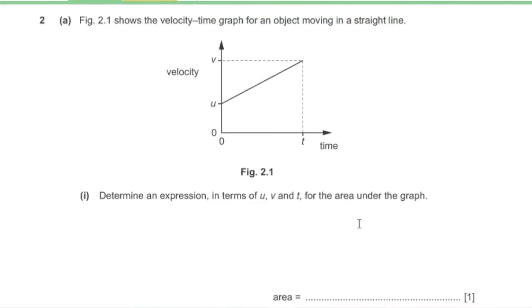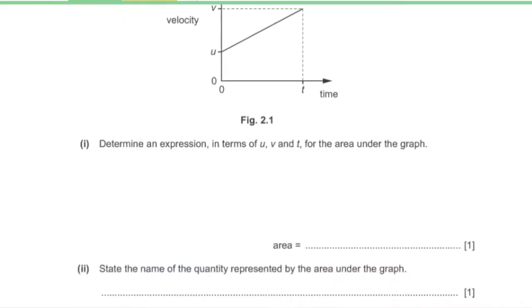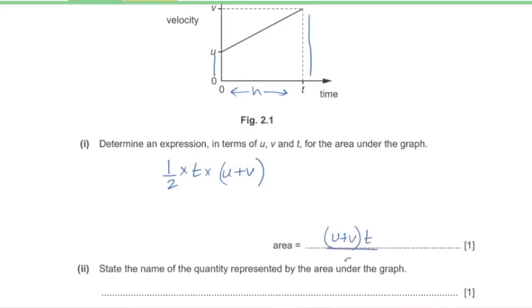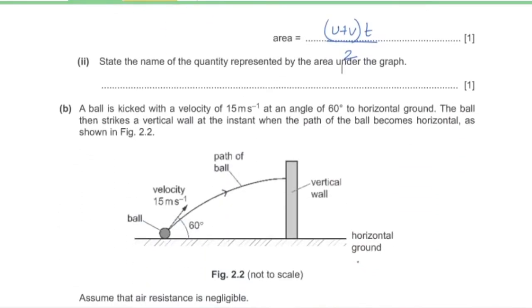Question 2, part A, figure 2.1 shows a velocity-time graph. Part 1: determine an expression in terms of u, v, and T for the area under the graph. The area under a velocity-time graph is displacement. The shape is a trapezium, so area equals half times height times the sum of parallel sides: (u + v) × T / 2.